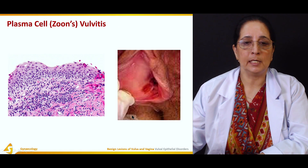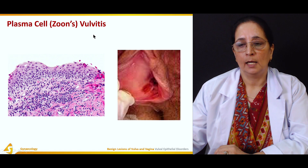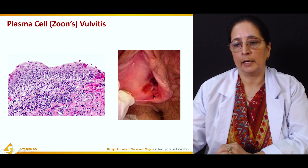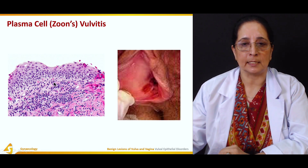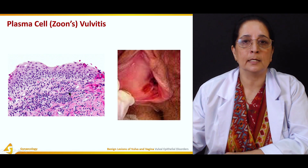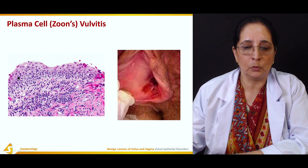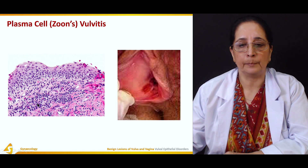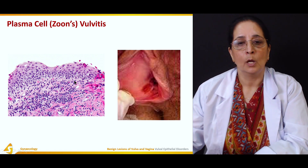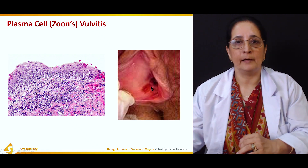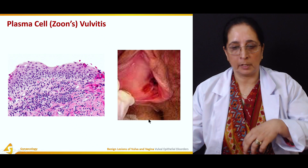Another condition is plasma cell vulvitis. There is reddish ulceration and scarring of the vulva leading to inflammation, and plasma cells are present. Plasma cells have an eccentric nucleus and central clear cytoplasm. This is plasma cell vulvitis, with erythematous lesions present around the vulva.